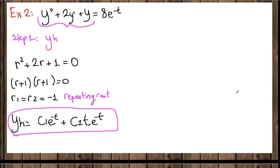Back to our question: we have repeated roots, so our homogeneous solution is y_h = c1·e^(-t) + c2·t·e^(-t). Now let's go to step 2.